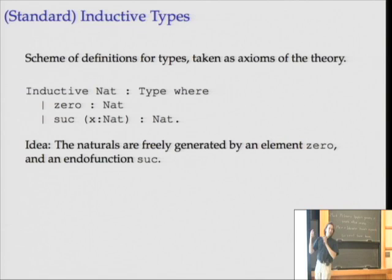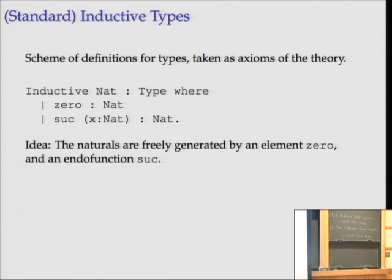What are the old inductive types that we already have that are well understood? There's one that you're all very familiar with: the natural numbers. The syntax for defining the natural numbers in some implementations of the type system would be something like this, and I'll use this syntax as we go through for lots of definitions because it's more convenient than any of the alternatives.